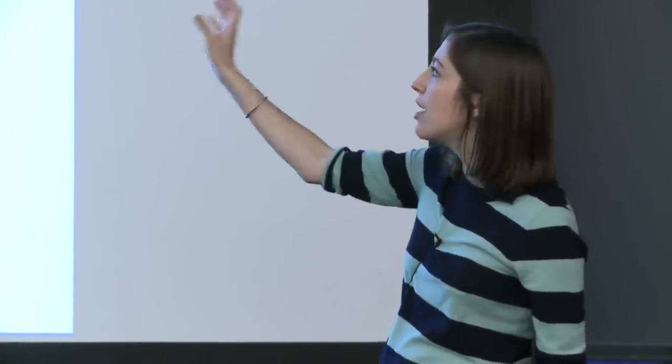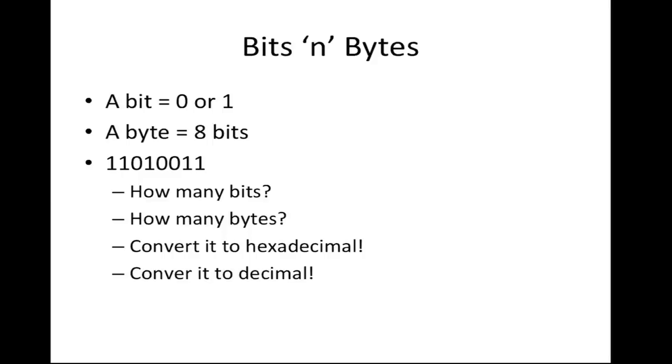Let's convert this byte to hexadecimal. Hexadecimal is base 16, and it's pretty easy to convert a binary number to hexadecimal. We look at groups of four bits. Starting with the rightmost group — 0, 0, 1, 1 — that's 1 plus 2, which makes 3. Then the other block: 1, 1, 0, 1 — that's 1 plus 4 plus 8, which equals 13, making D. In hexadecimal we go 0 through F, where 10 is A, 11 is B, and so on up to F being 15. So here 13 is D.